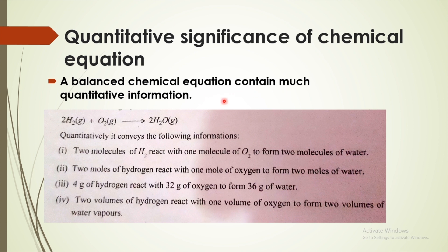A balanced chemical equation contains much quantitative information. For example, 2H2 plus O2 gives 2H2O. It conveys the following information: two molecules of hydrogen react with one molecule of oxygen to form two molecules of water.